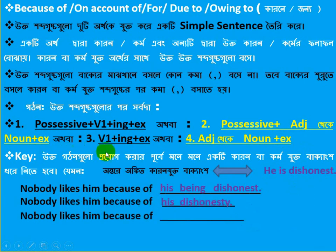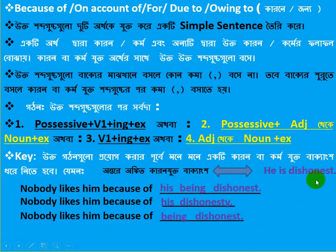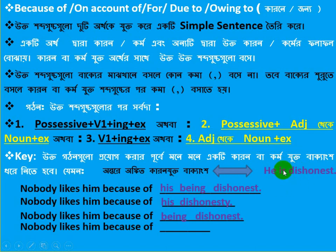Number 3 sentence: we will try to complete the incomplete sentence. 'Nobody likes him' — the possessive here is an adjective converted to a noun. The noun form of 'dishonest' is 'dishonesty' — that is the extension used to complete the sentence.